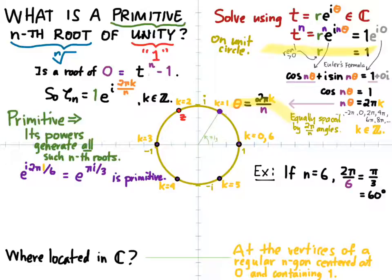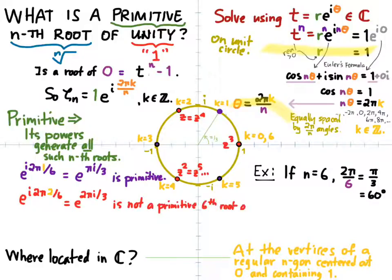For example, if k is equal to 2, then we get e to the 2 pi i over 3. If that's z, then z squared is e to the 4 pi i over 3, which is down in the third quadrant, z cubed is equal to 1, z to the 4th is back in the second quadrant, and so forth. So in fact, that 6th root of unity only generates 3 out of the 6 6th roots of unity, and therefore e to the 2 pi i over 3 is not a primitive 6th root of unity.